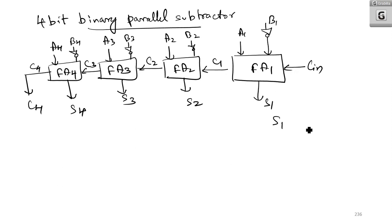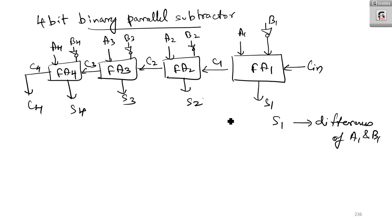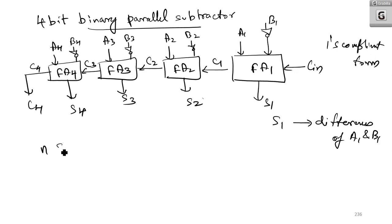S1 is the difference of A1 and B1; similarly S2 is the difference of A2 and B2, and S3 is the difference of A3 and B3 — and that too in one's complement form. If you are adding 1 to that, you will get it in two's complement form. This is basically the structure of a 4-bit binary parallel subtractor. You can draw it for N stages also — if it is N-bit, you can have N stages of full adder.